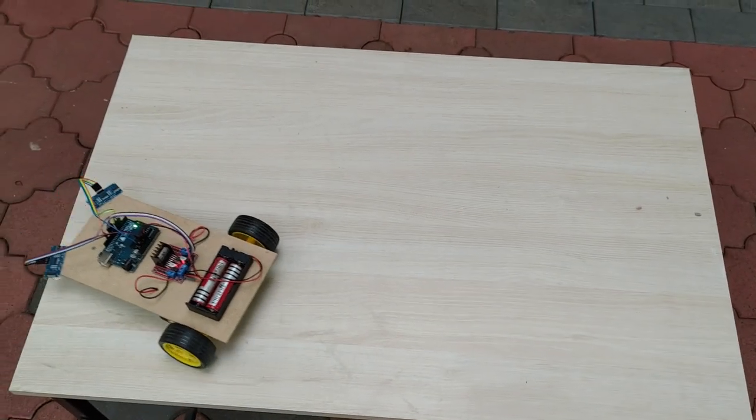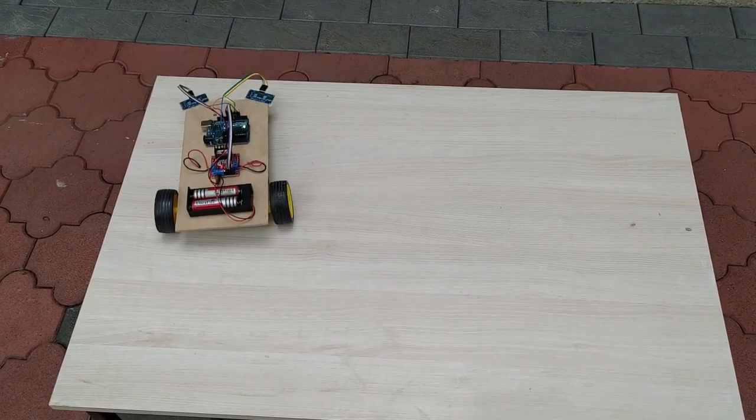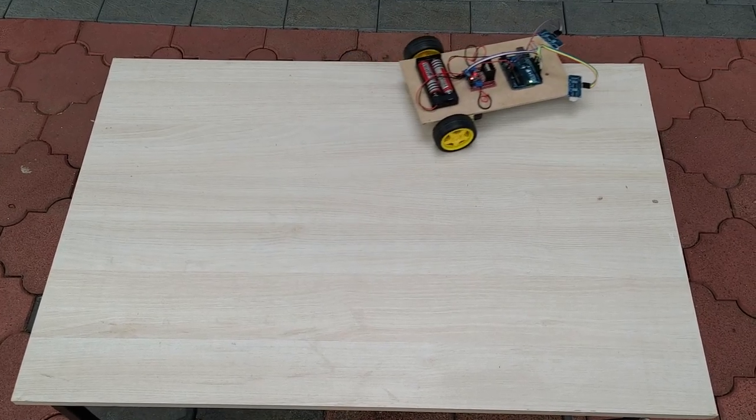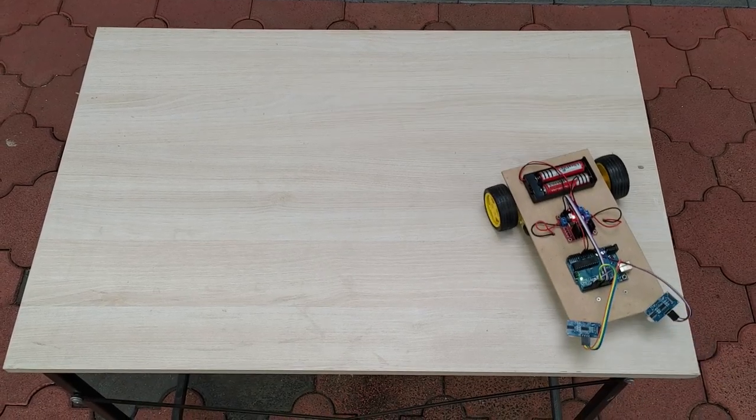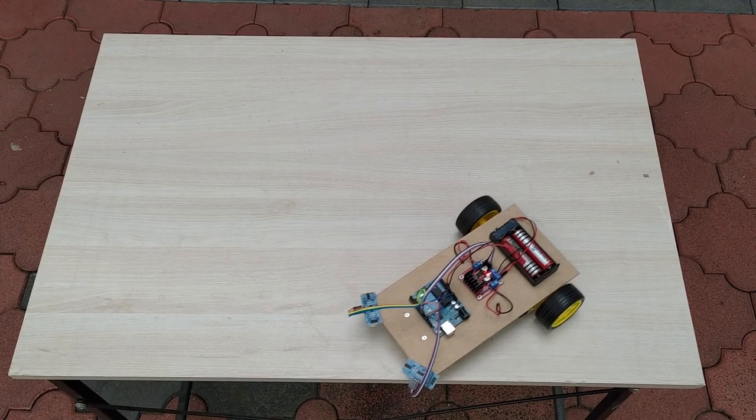Now let us do the testing of the robot. The robot is working very well. The edge detection is done using the two ultrasonic sensors. When both the sensors are on the top of table, the robot continues to move forward.